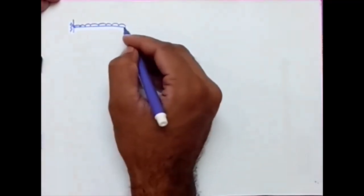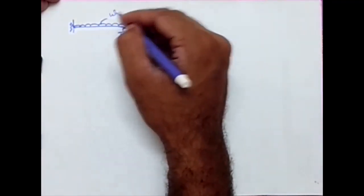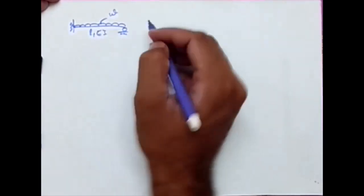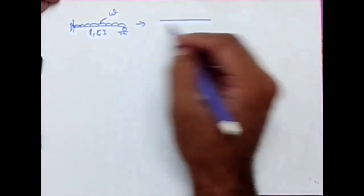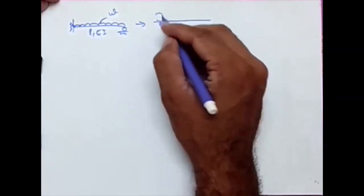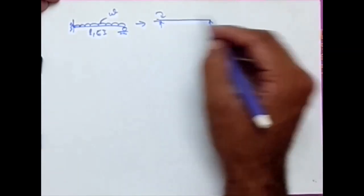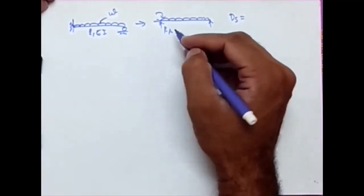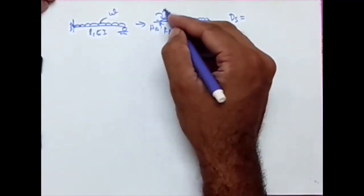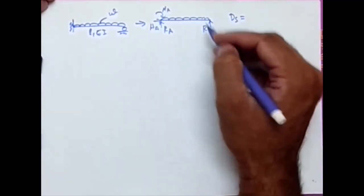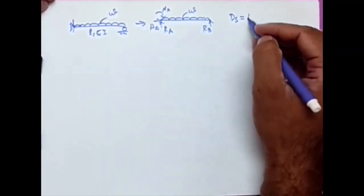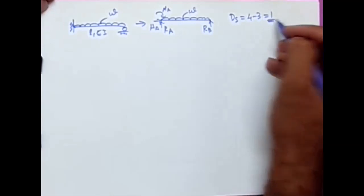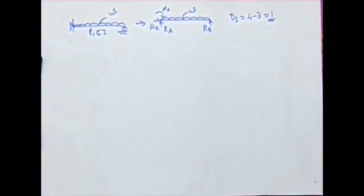This is the problem: a propped cantilever with parameters W, L, E, and I. We have constructed the force diagram, represented everything as forces, and identified the reactions as Ra, Ha, Ma, Rb, and W. Computing the degree of static indeterminacy, I got 4 minus 3 equal to 1, so Ds equals 1.